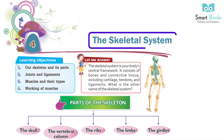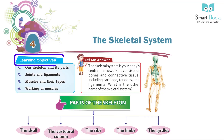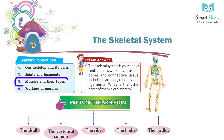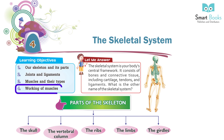The Skeletal System. Learning Objectives: 1. Our skeleton and its parts. 2. Joints and ligaments. 3. Muscles and their types.